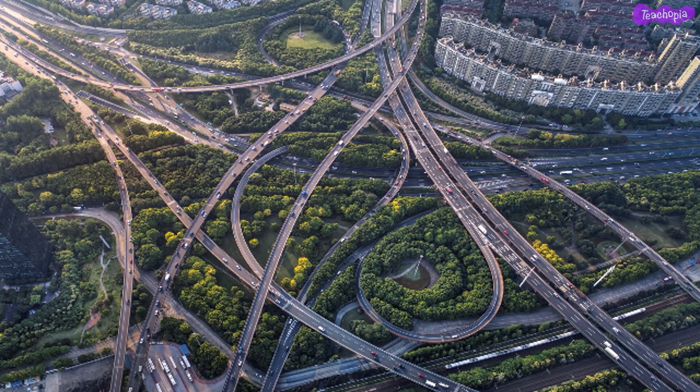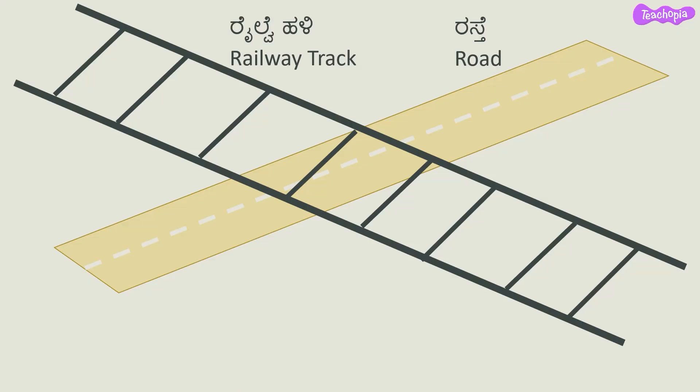In big cities, we see roads and flyovers created in various directions. In many places, we see a road and railway track crossing each other. When two roads or a railway track and road intersect, we say that a junction is formed and the junction is common for both.